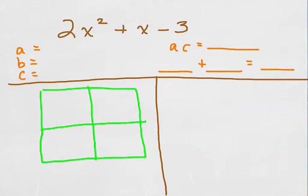Now we're going to factor the trinomial 2x squared plus x minus 3 using the exact same method we used on the previous example.